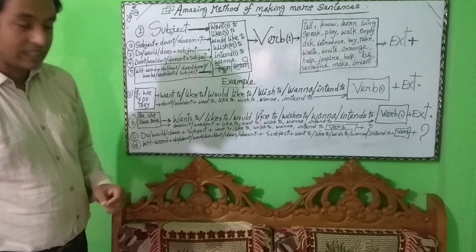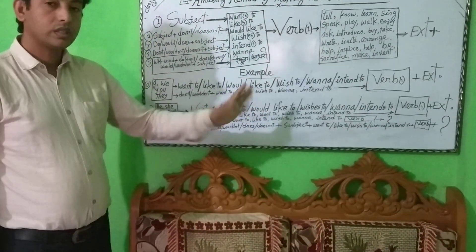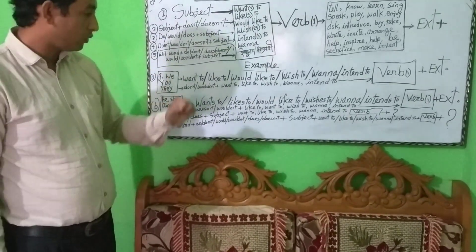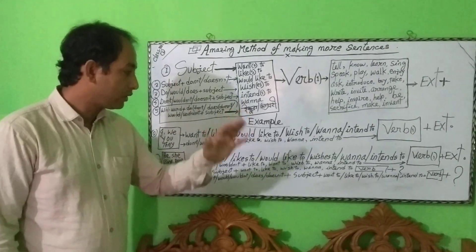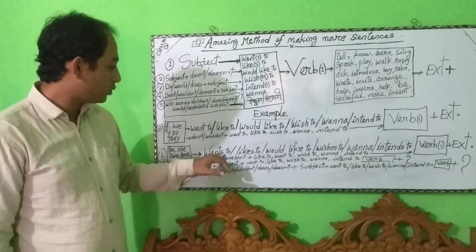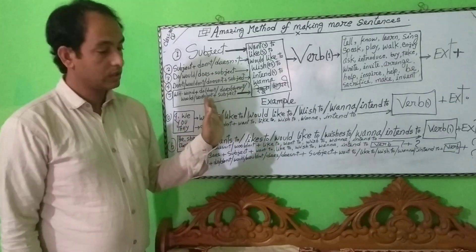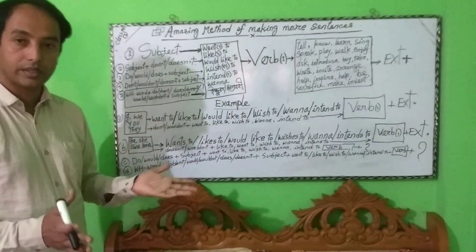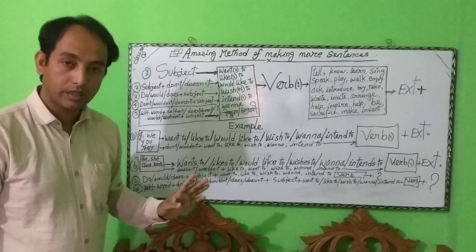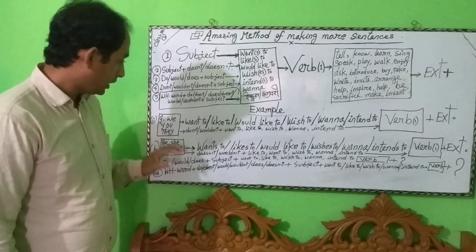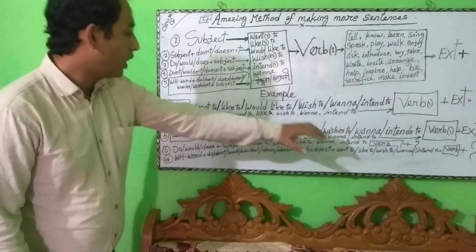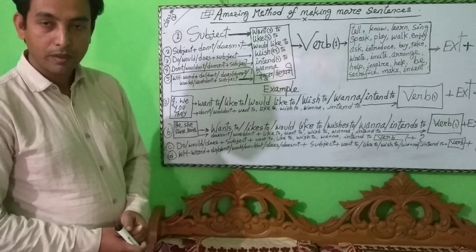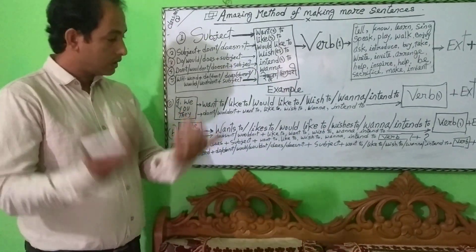For third person singular number, you add 's' — he wants to, likes to. For 'would,' you do not need to add any 's' at the end. He, she, Reena, Beena — wants to, likes to, wishes to. For 'wanna,' it is not necessary to add 's.' Intends to do anything. For example: he wants to tell a story, he likes to tell a story, he wishes to tell a story, he intends to tell a story, he would like to tell a story.